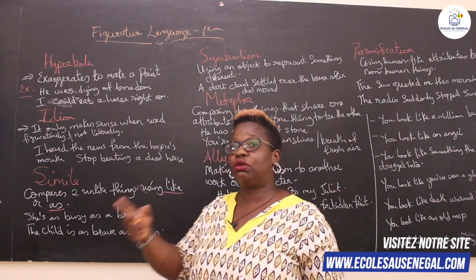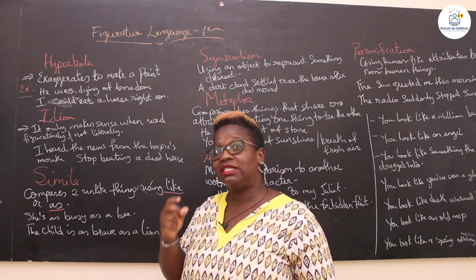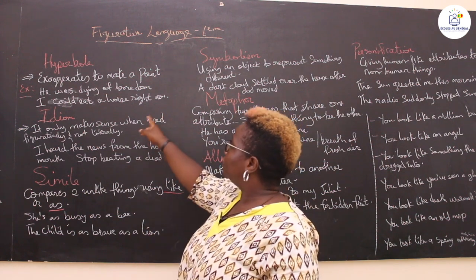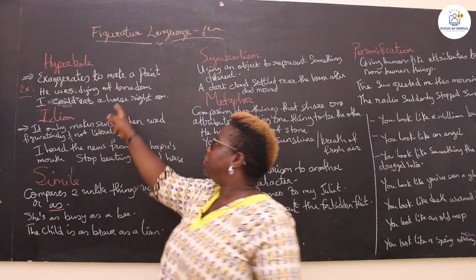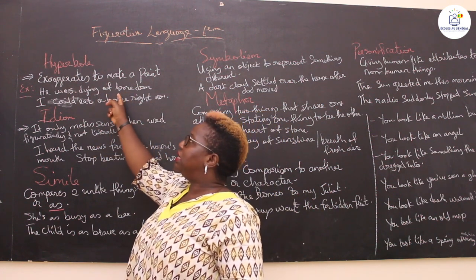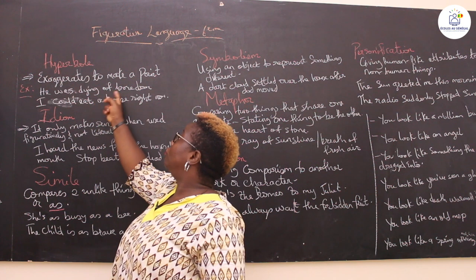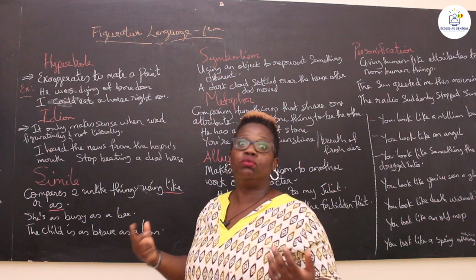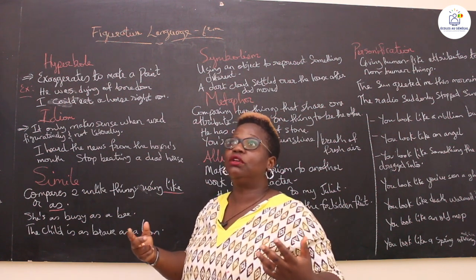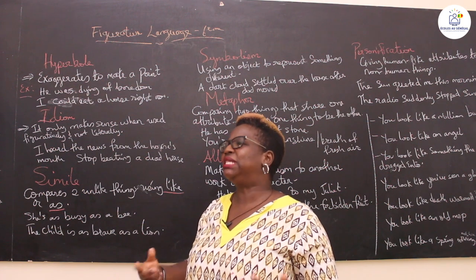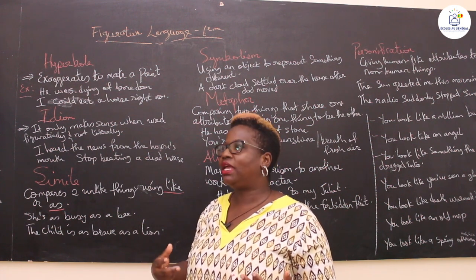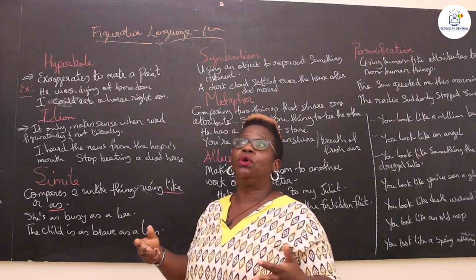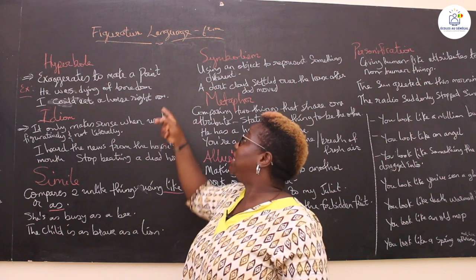You use a hyperbole to exaggerate in order to make a point. Remember that you're trying to pass on a message, and you want people to understand that message — that it is serious, but you're exaggerating as far as it is. For example, 'he was dying of boredom.' Boredom means being bored. So 'dying of boredom' is a way of saying you're really bored — you have absolutely nothing to do.